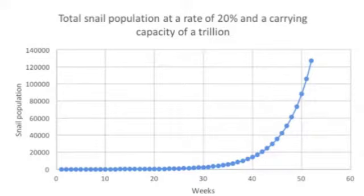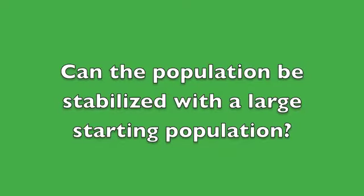This graph looks like an exponential at first for only 52 weeks and never reaches carrying capacity in that time. But if it went for more than a year or a longer period of time, eventually it would look like a logistic growth model.